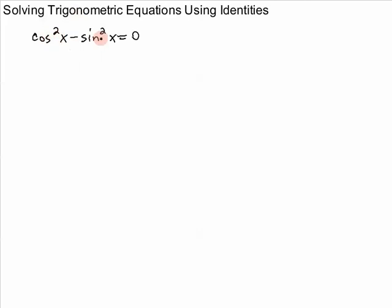You could recognize that this is the double angle formula for cosine, so you could immediately say cosine of 2x equals 0, because this is cosine of 2x.